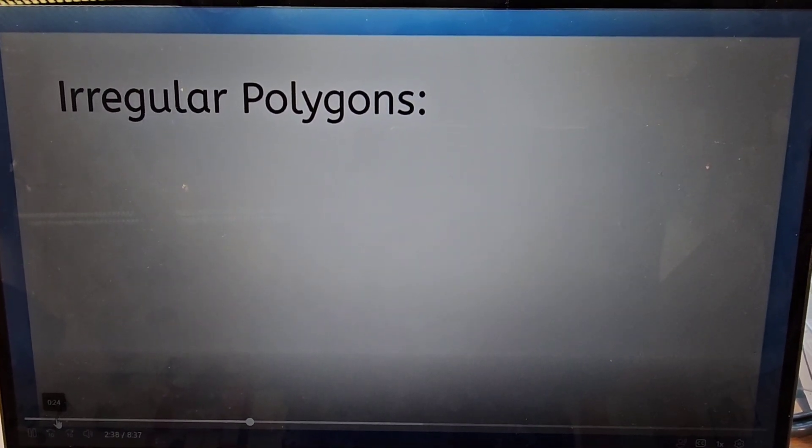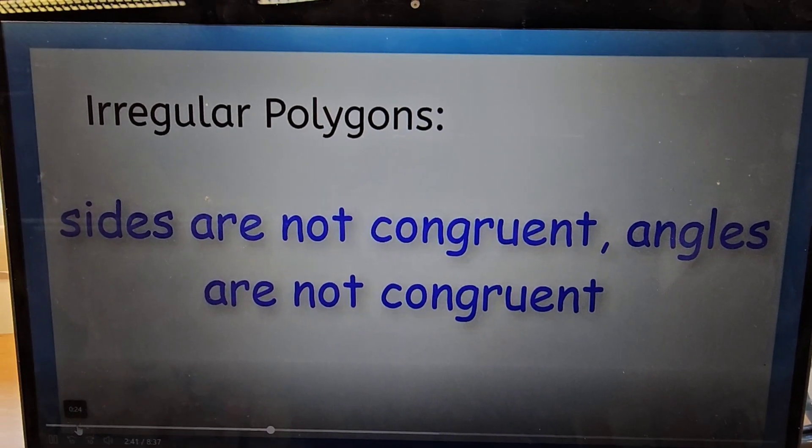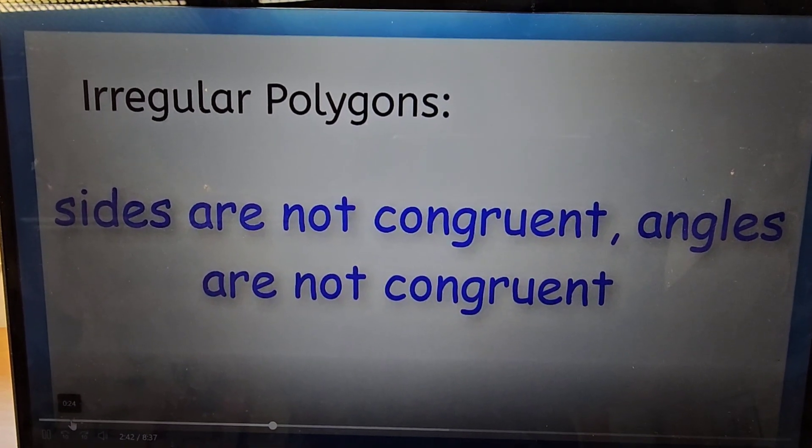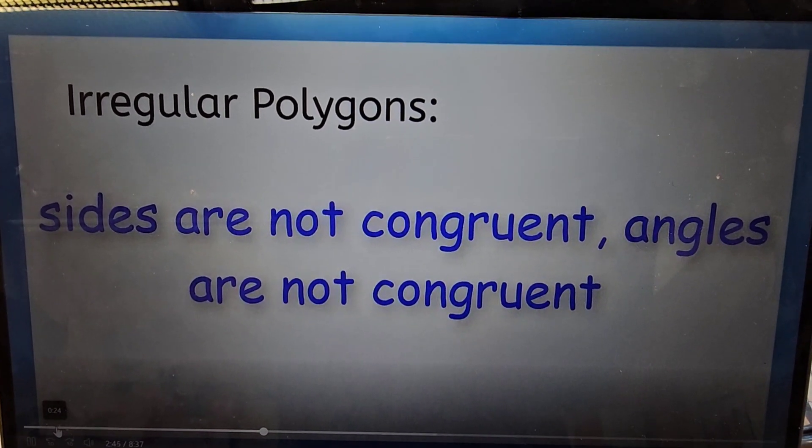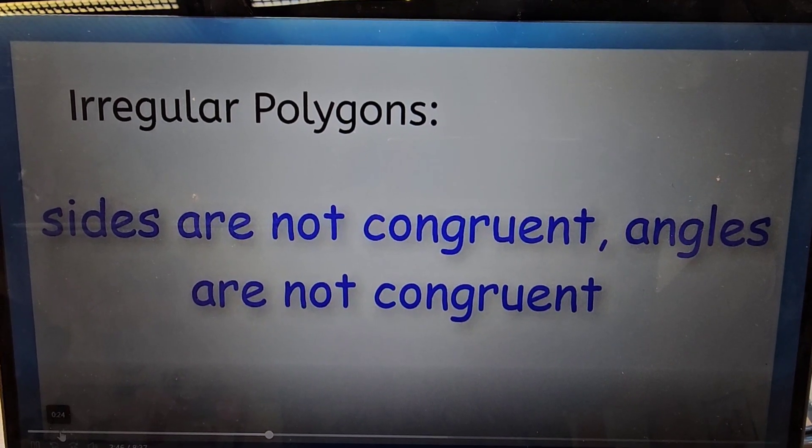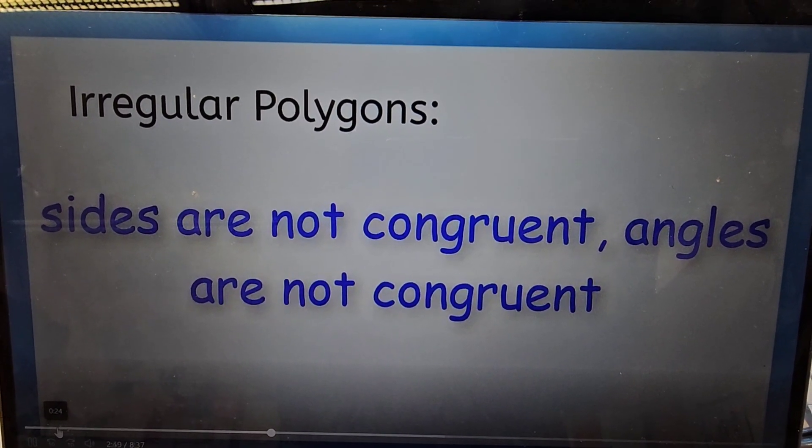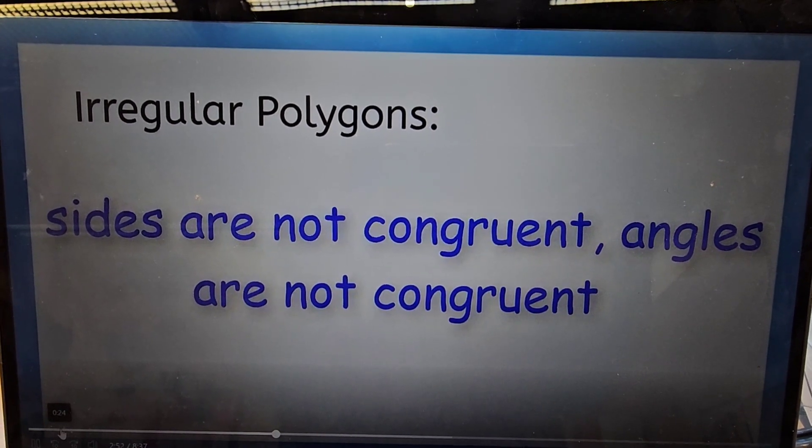Irregular polygons have sides that are not congruent. That means they have side lengths that are not all the same length. They are also not equiangular. While some angles and sides might be the same size and shape, not all will be congruent.